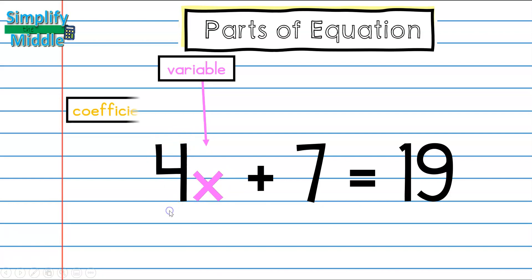In front of our x, we have something called a coefficient. Our coefficient will always come in front of x, and it means to multiply that x.